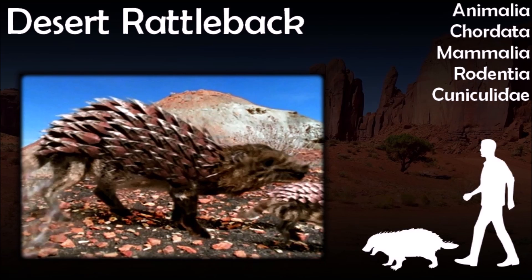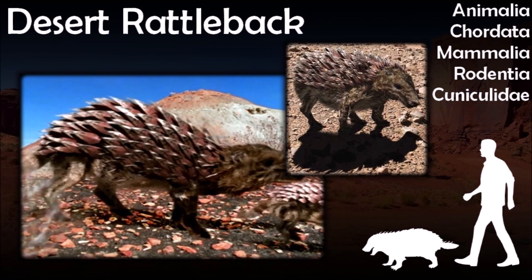South American Rattlebacks were highly successful on the dry grasslands spreading across the Amazon basin, and were able to migrate northwards into the North American desert, where they evolved into yet another species adapted for the cold desert environment. The North American Rattleback, or Desert Rattleback, is a species of armored rodent native to the North American desert of 5 million A.D. and is a descendant of the South American Rattleback. After crossing the Amazon basin and migrating toward North America, the Rattleback underwent numerous physical alterations to withstand the harsh desert conditions of the American Midwest.